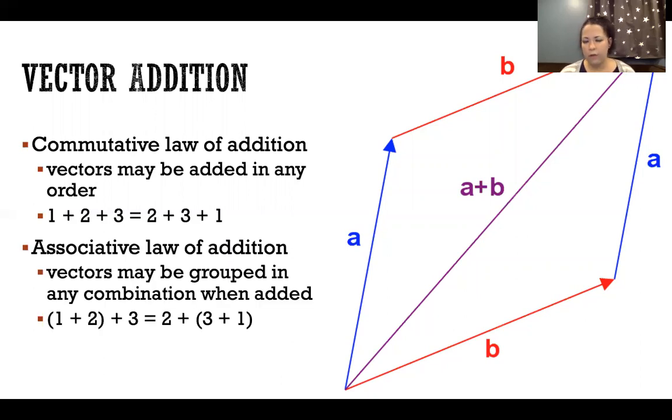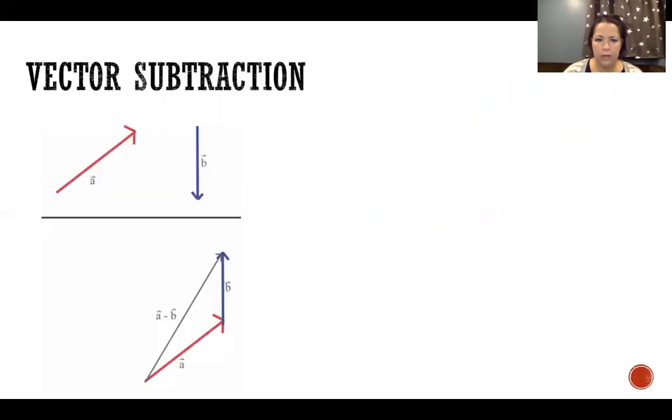The associative law of addition also applies to vectors, so they can be grouped in any combination when we add them. Like with regular math, we can have (1 + 2) + 3, or we could have 2 + (3 + 1). We can group them in any way, we can add them in any order, just like any other kind of addition.